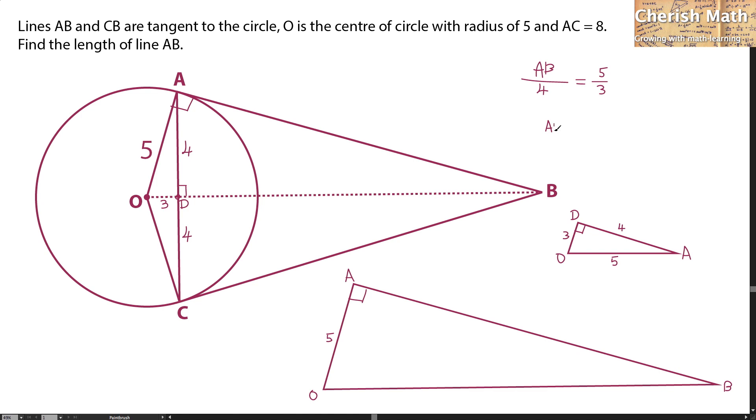Now AB equals 5 over 3 multiplied by 4, which gives an answer of 6.67 units.